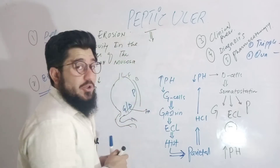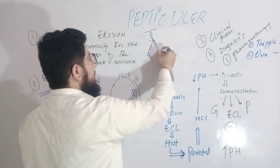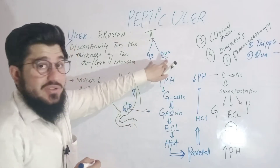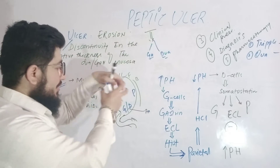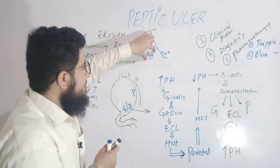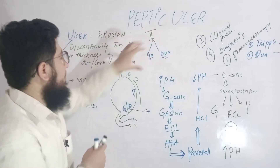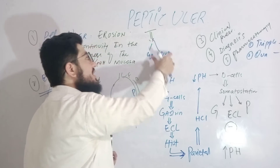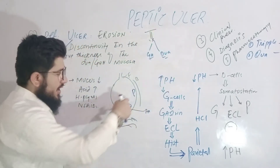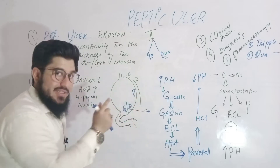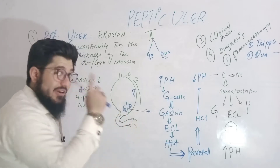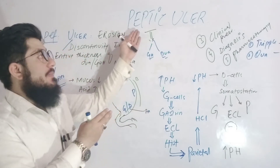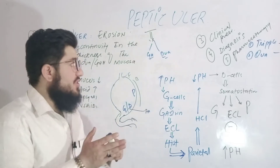The two regions are: number one, the gastric region, and number two, the duodenal region. Both these regions are collectively called the peptic region. Now, from these gastric and duodenal regions, if the mucosa — which is the protective layer — is removed, that is named as peptic ulcer.